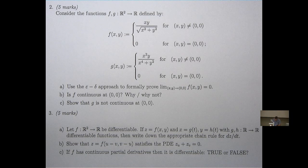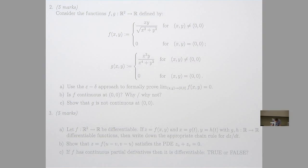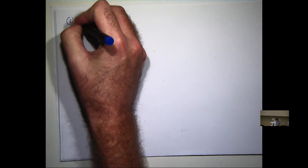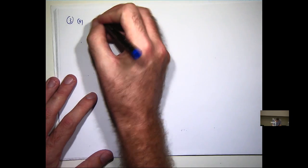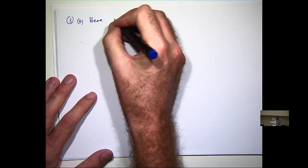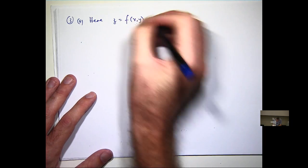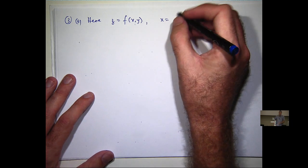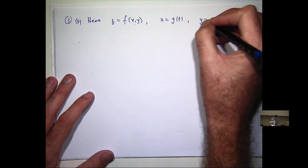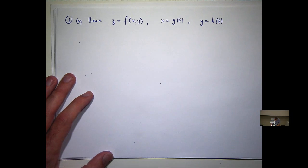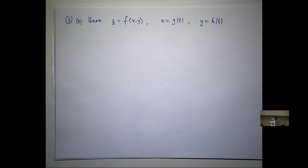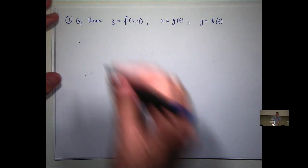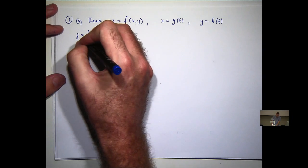So this is just a matter of writing the chain rule down. I've got f is a function of two variables, and those two variables are functions of one variable, so it's very easy. Let's just draw our diagram, make sure we're covering all the bases.